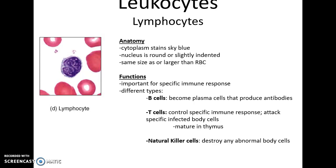Lymphocytes are about the same size as red blood cells. They have an extremely large nucleus, and the cytoplasm is sort of sky-blue-gray. There are different types, but you can't tell the difference under a light microscope. They're important for a specific immune response. B cells can differentiate into plasma cells and produce antibodies. T cells can control the immune response and even attack specific infected body cells — they mature in the thymus, which is where they get the T from. Natural killer cells destroy any sort of abnormal body cells.